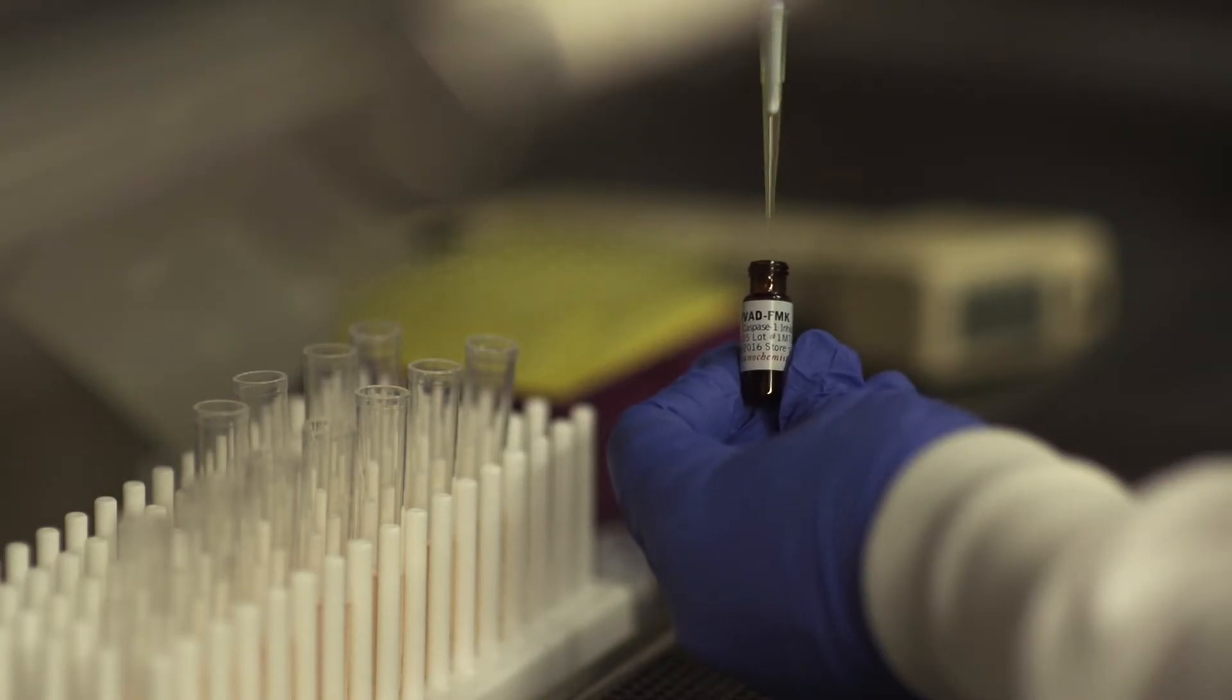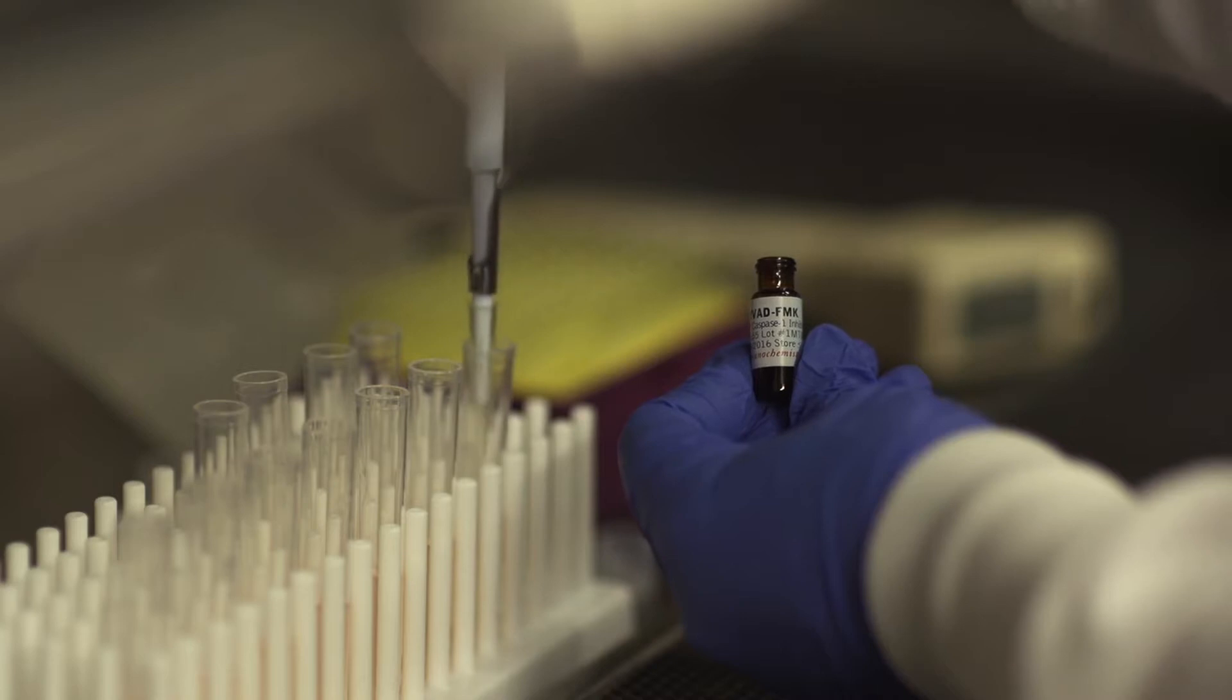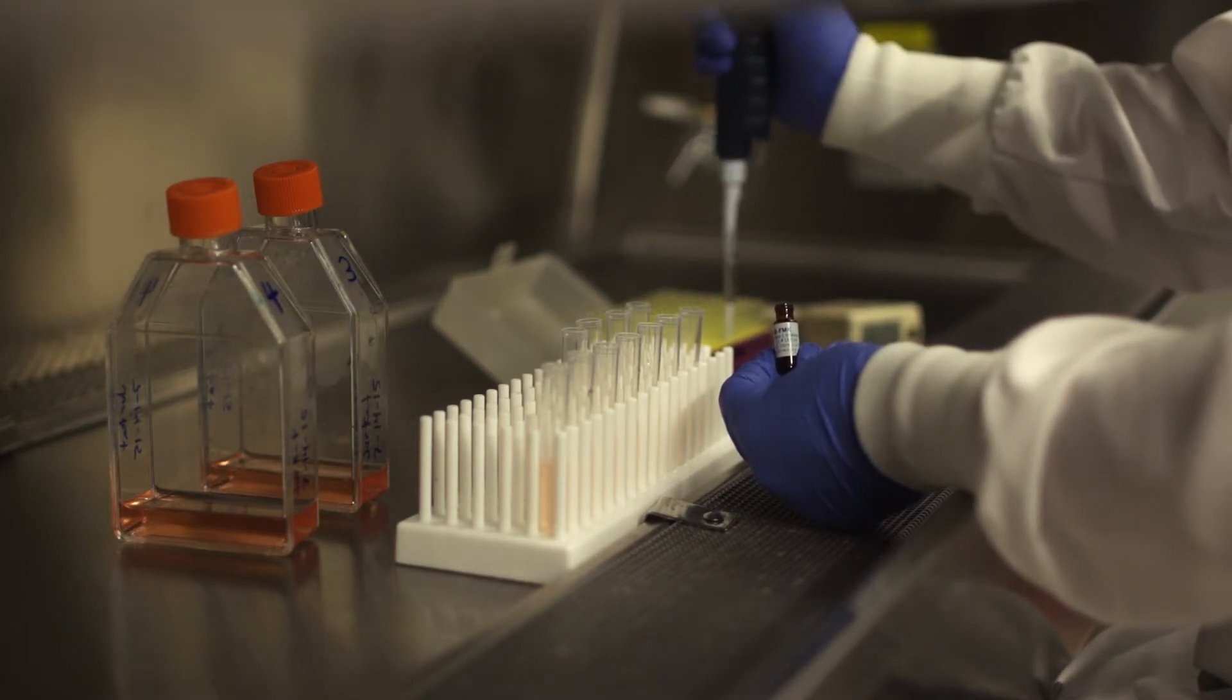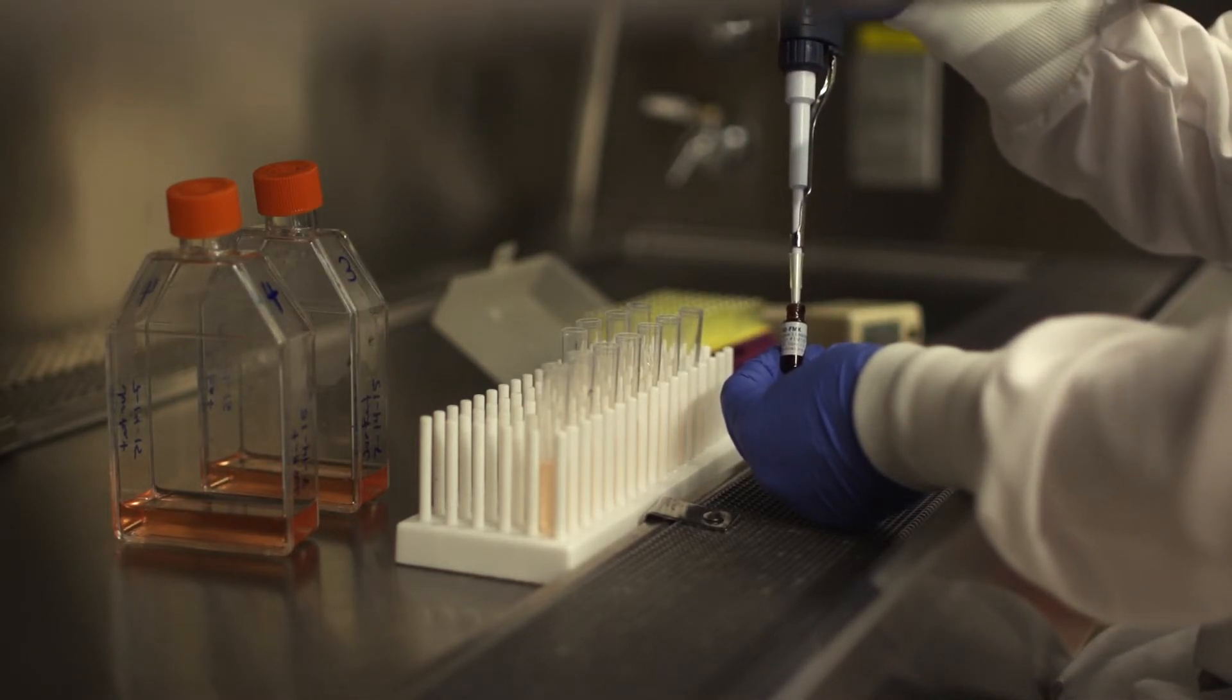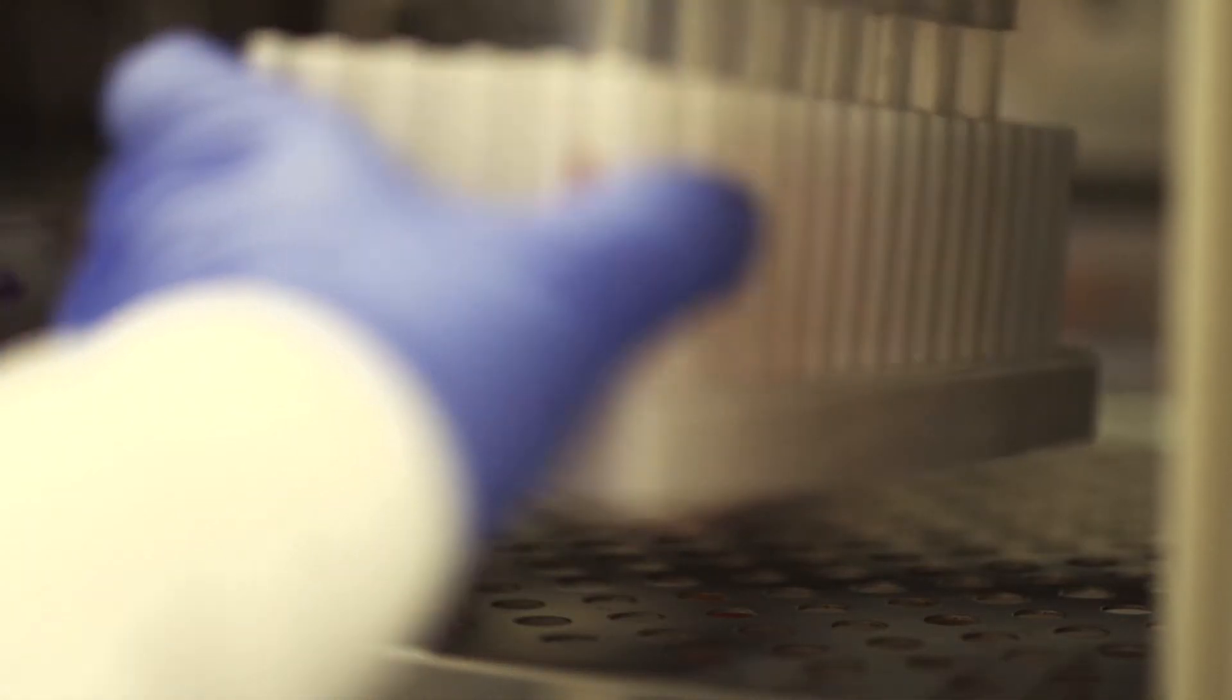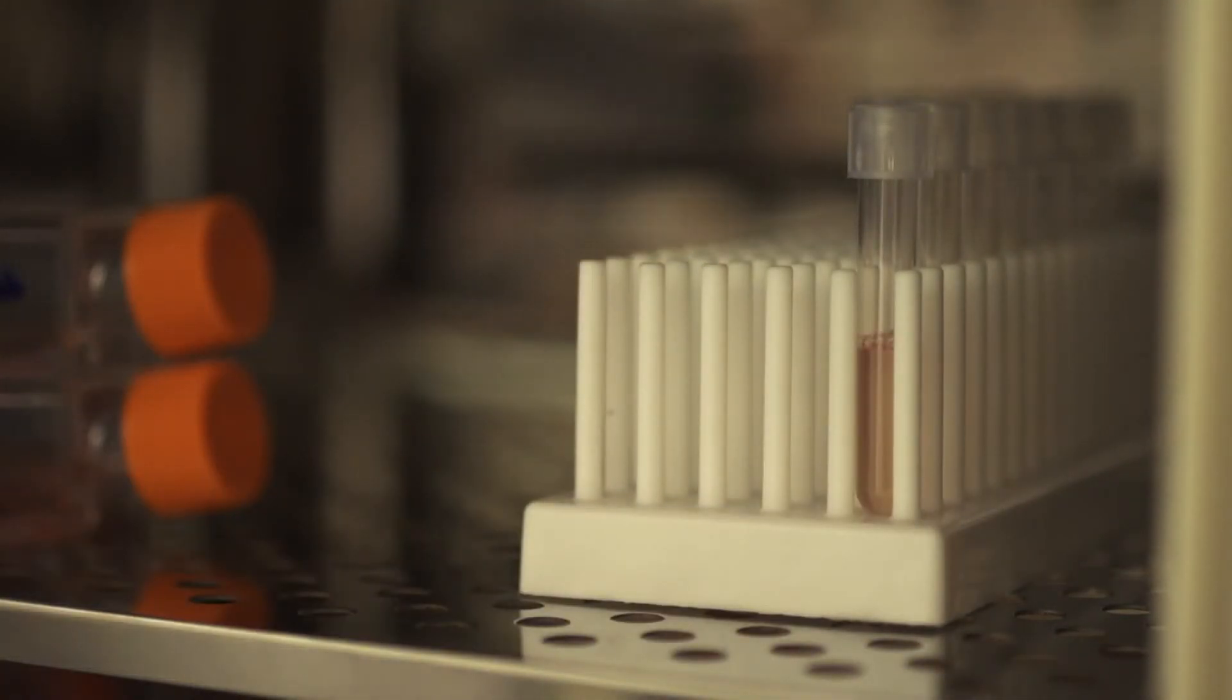FLICA is cell-permeant and will efficiently diffuse in and out of all cells. There is no need to lyse or permeabilize the cells. If there are active caspase enzymes inside the cell, they will covalently bind with FLICA and retain the fluorescent signal inside the cell. There is no interference from procaspases or inactive forms of the enzyme.